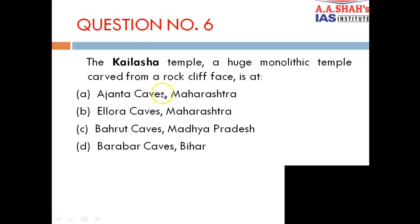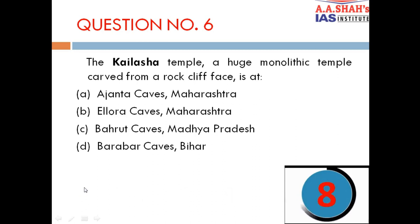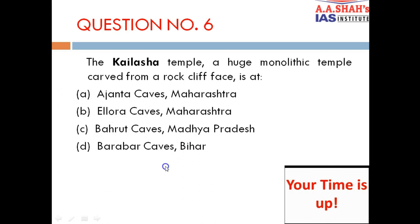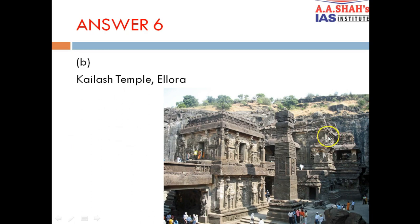Question 6: The Kailash temple, a huge monolithic temple carved from a rock cliff face, is at A. Ajanta Caves, Maharashtra, B. Ellora Caves, Maharashtra, C. Bharhut Caves, Madhya Pradesh, D. Barabar Caves, Bihar. The correct answer is B — Ellora Caves. This monolithic Kailash temple has been completely carved out from a single rock boulder at the Ellora Caves in Maharashtra.